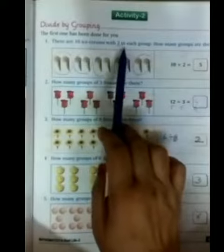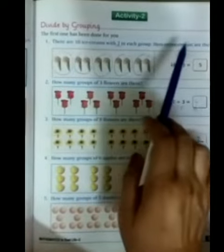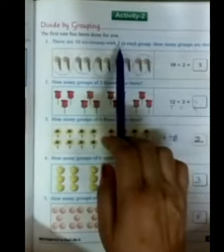Question number 1: there are 10 ice creams with 2 in each group. How many groups are there? Here we have 10 ice creams with 2 in each group. How many groups will you find out? Each group must have 2 ice creams. It means circle 2 by 2.